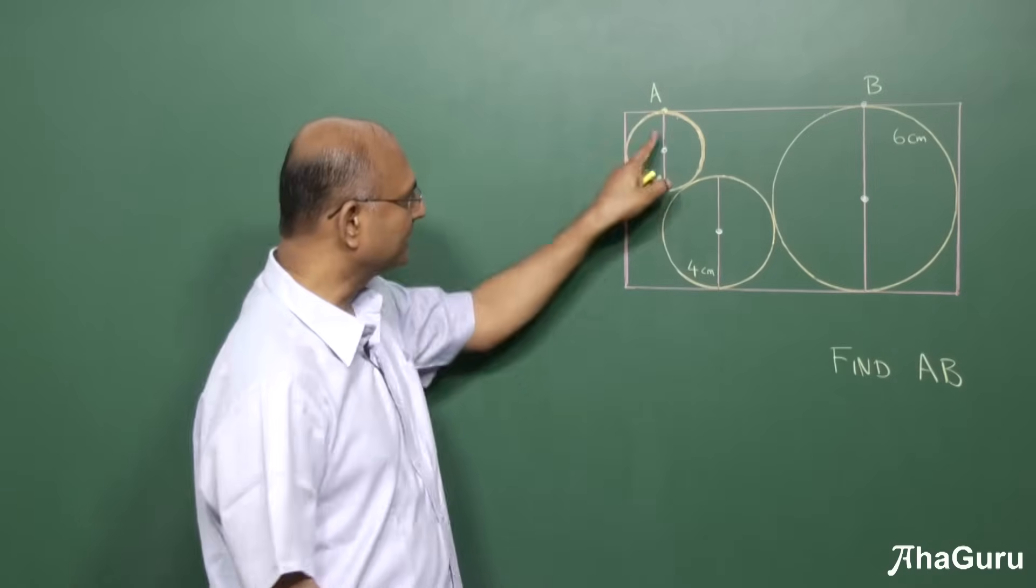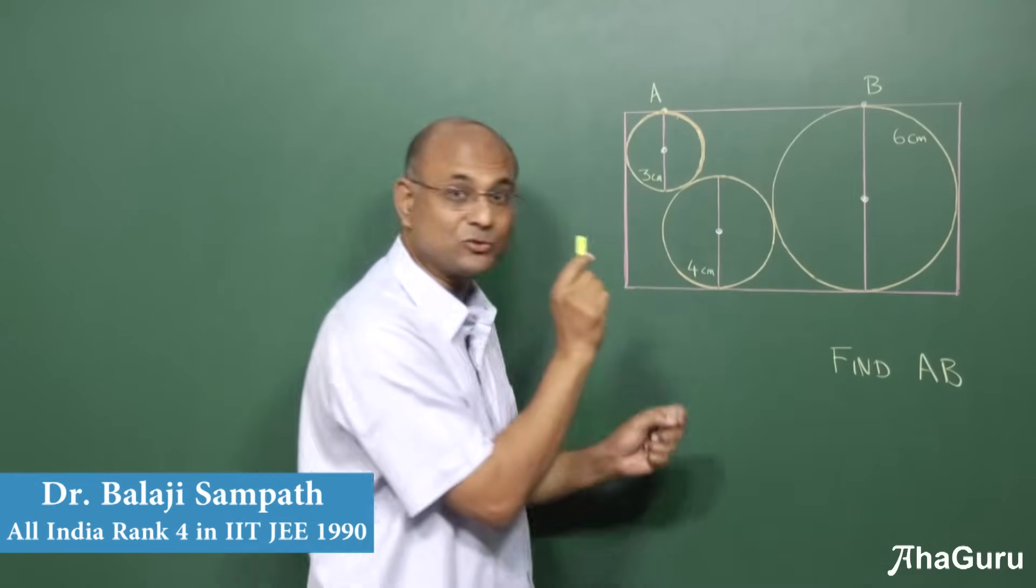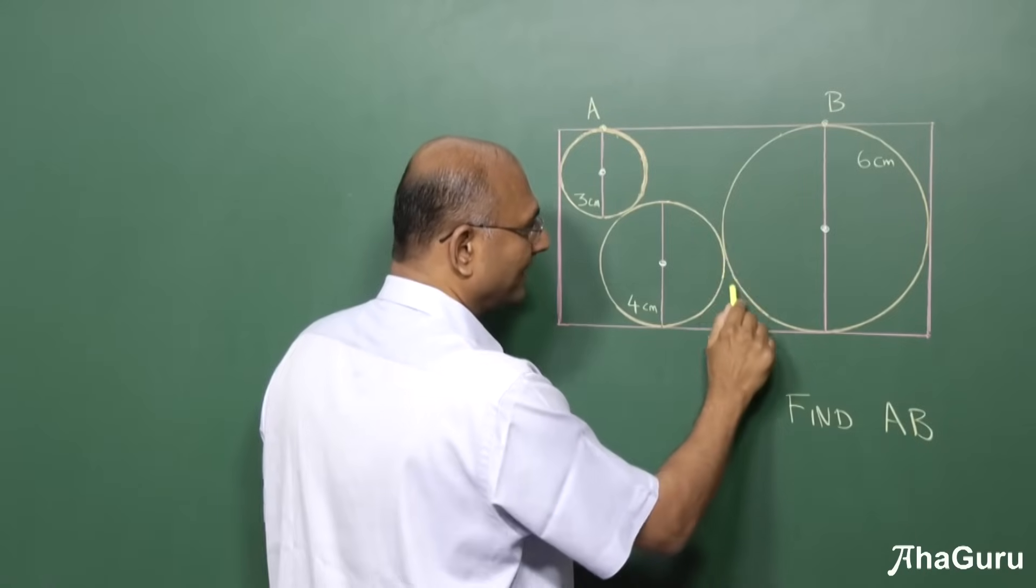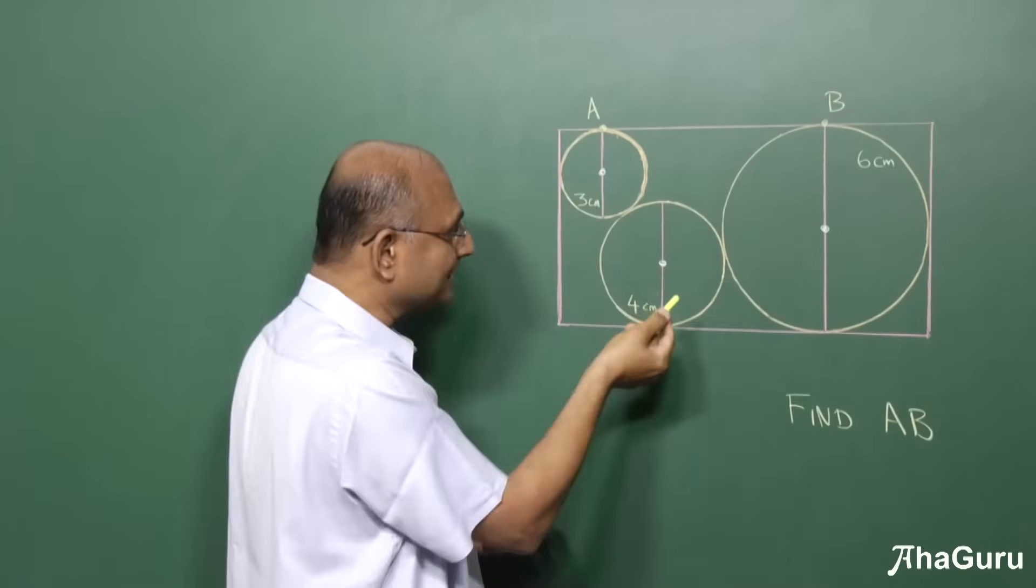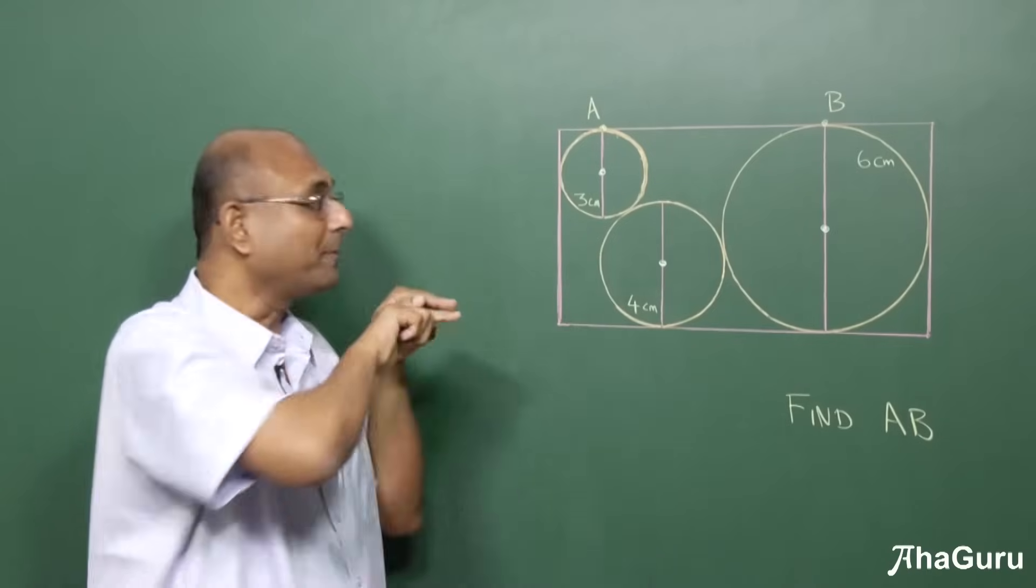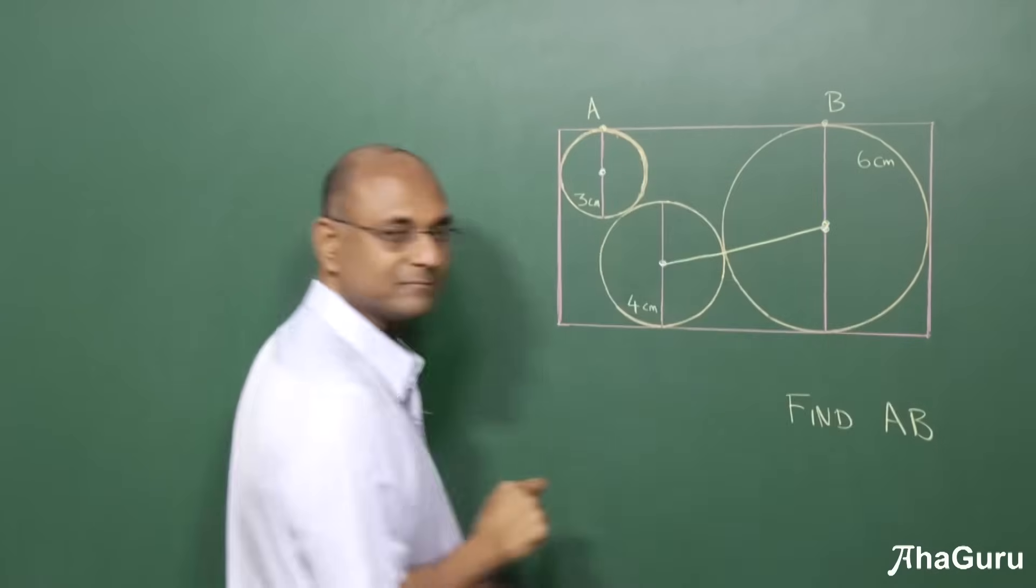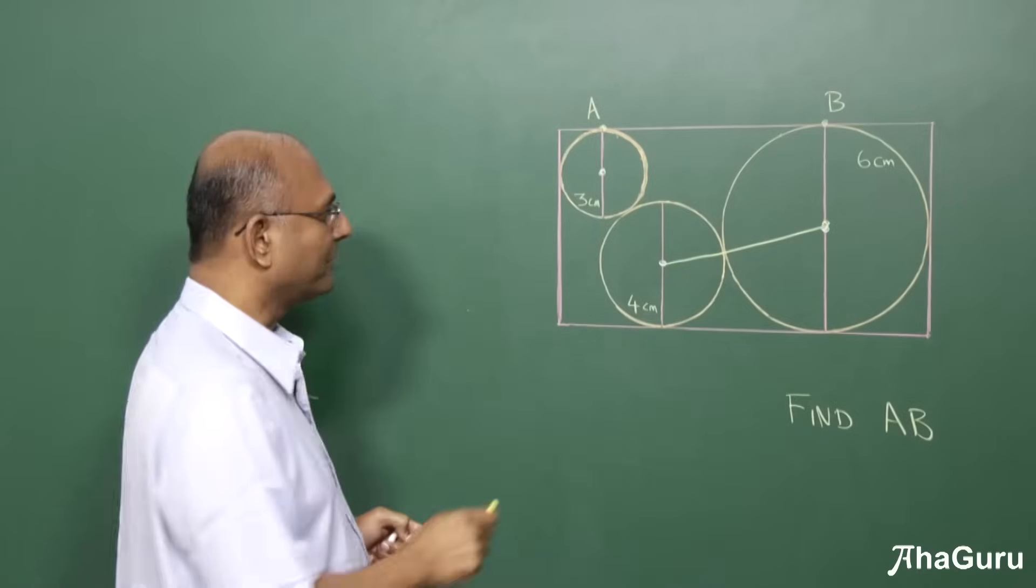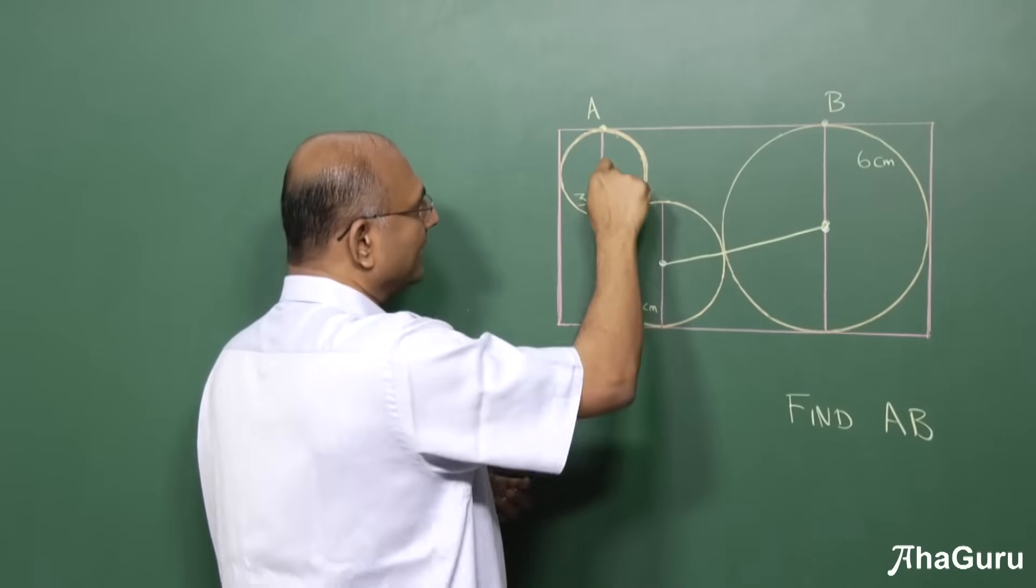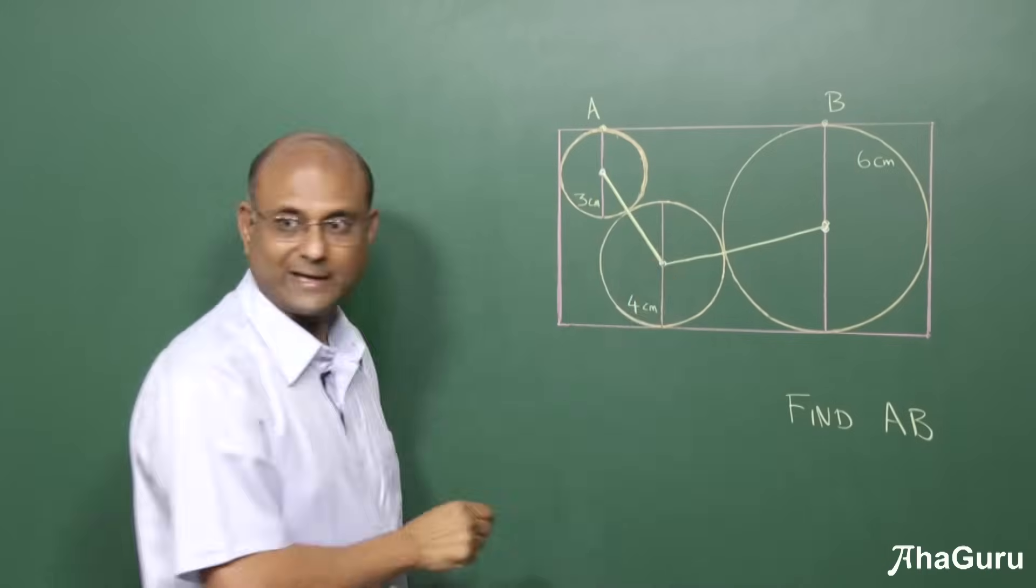Let us first figure out which are the points that are the centers of each of these circles. Now if I join this center to that center, that will actually pass through the point of contact. Why? Because the tangent, this is a common tangent here. The common tangent must be perpendicular to this radius. How can you have two perpendiculars at the same place? Not possible. So the two perpendiculars must form a straight line. So basically you know that this must be a straight line.